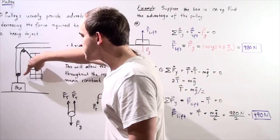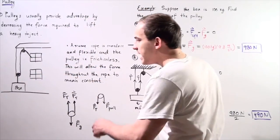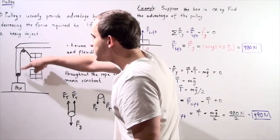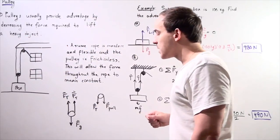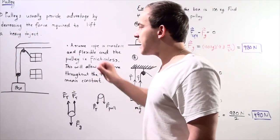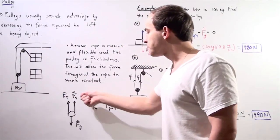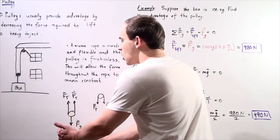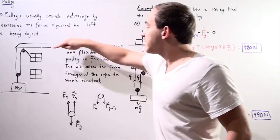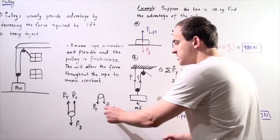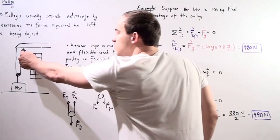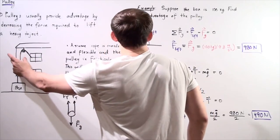Let's label all the forces acting on this pulley system. We have one continuous string throughout the entire system, which means the tension on one side of the string is exactly the same as the tension on the other side. So we have two tension forces pulling upward and the force of gravity pulling downward on the box. On the other side, we have the pulling force and that same force of tension.